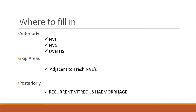Where to fill in: For cases with neovascularization of the iris or neovascular glaucoma, fill in as anteriorly as possible, up to the ora serrata. In uveitis, also fill in more anteriorly. Fill in adjacent to fresh NVEs, and for recurrent vitreous hemorrhage, fill in whatever posterior area is available.